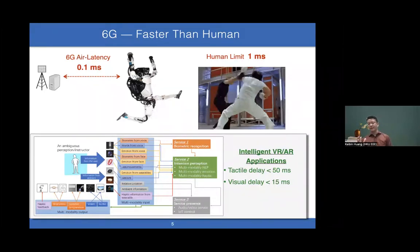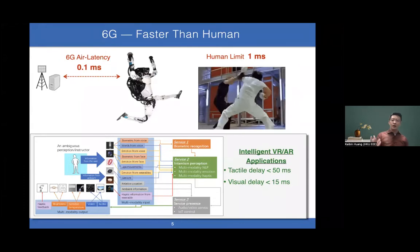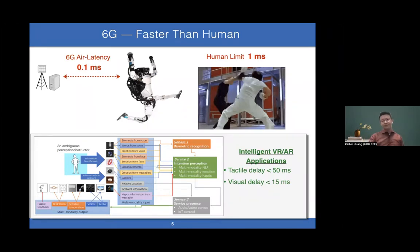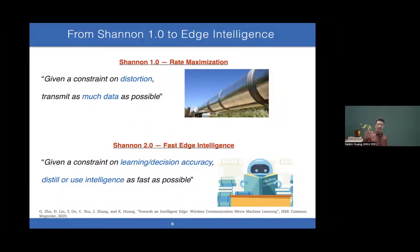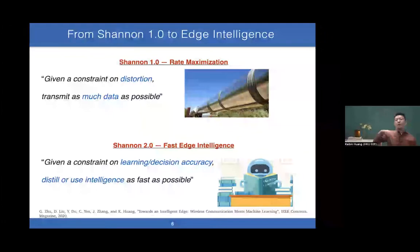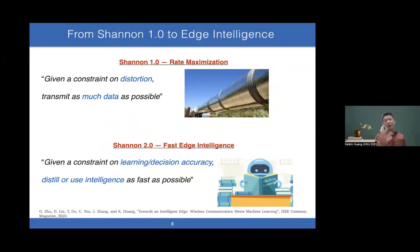Why? Because we can use very fast AI to support mission-critical applications. One major 6G service is to make VR and augmented reality applications empowered by AI. If we achieve this latency, we can meet tactile delay of 50 milliseconds and visual delay of 15 milliseconds. We're upgrading from Shannon 1.0 to edge intelligence, or Shannon 2.0.